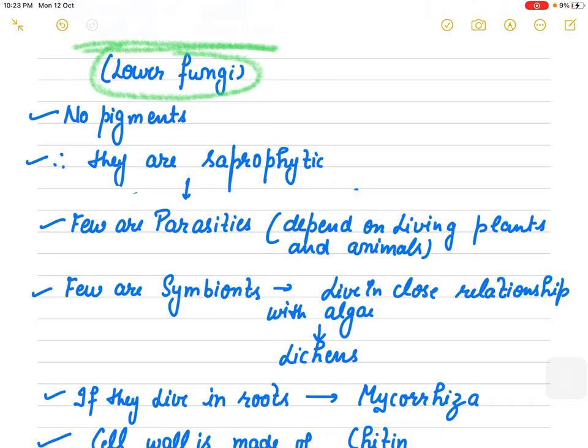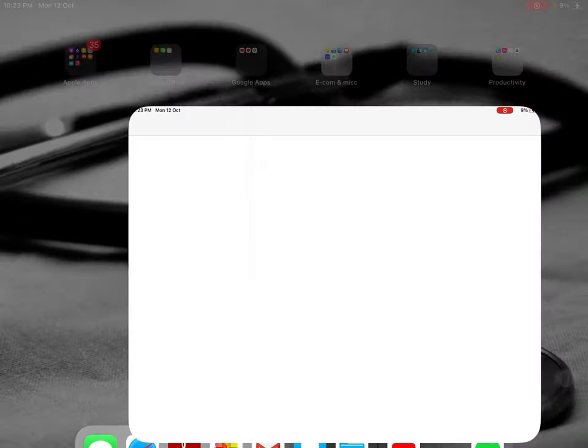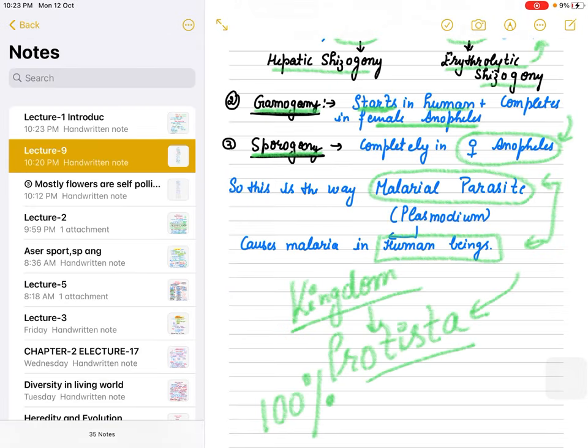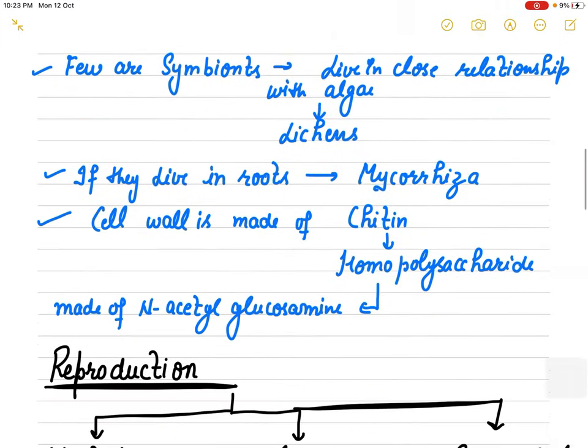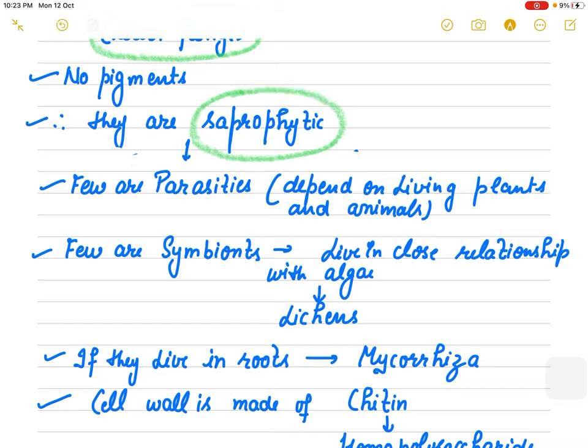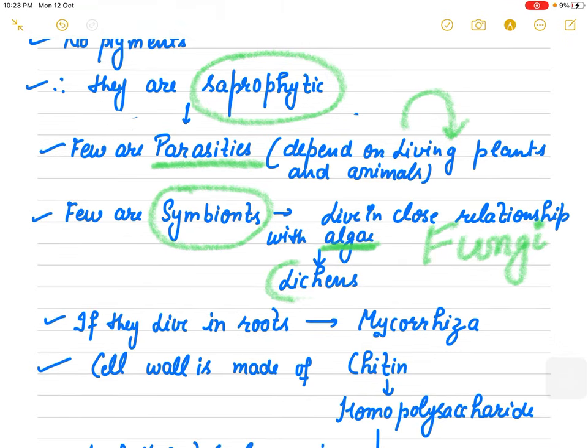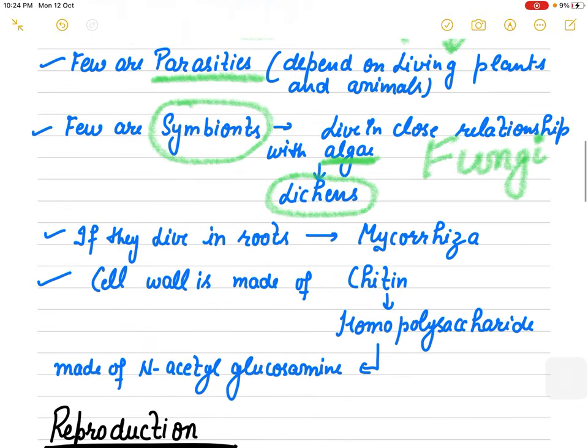No pigments, no chlorophyll - no pigments are present. Therefore they are saprophytic, they feed on dead and decaying organic matter. Few of them are parasites which depend on living plants and animals. Few are symbiotes - they live in very close relationship with others. If fungi lives in very close relationship with algae it will be known as lichens, and if fungi lives in roots of higher plants it is known as mycorrhiza.